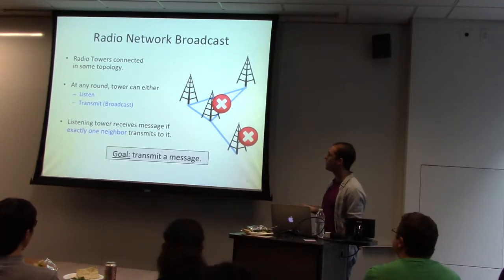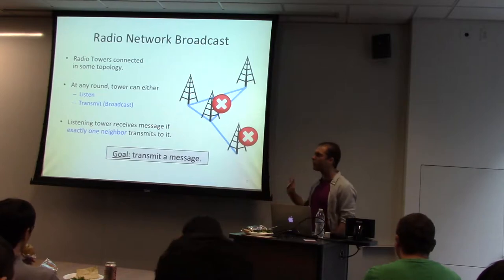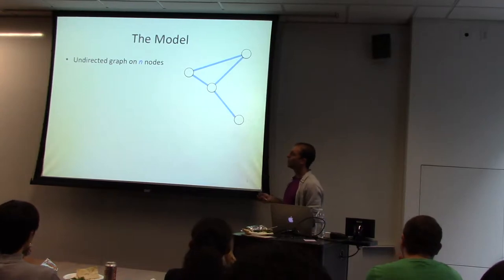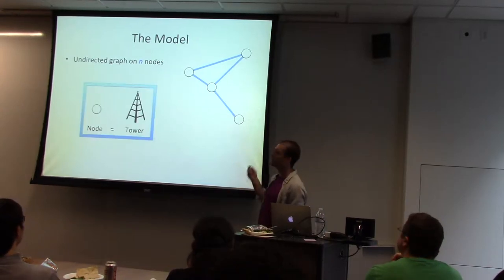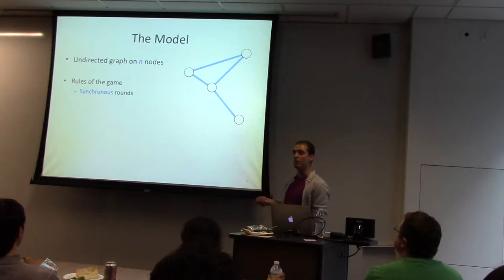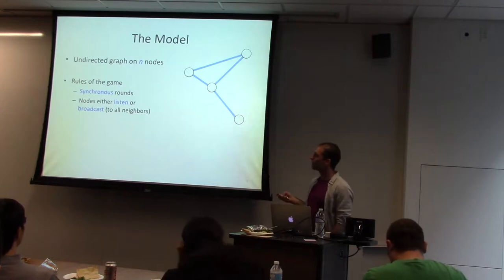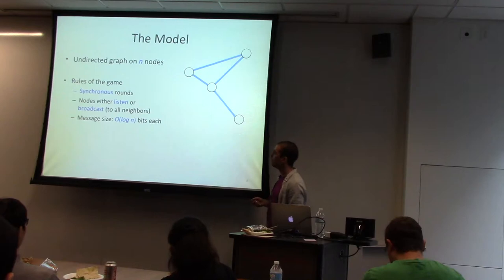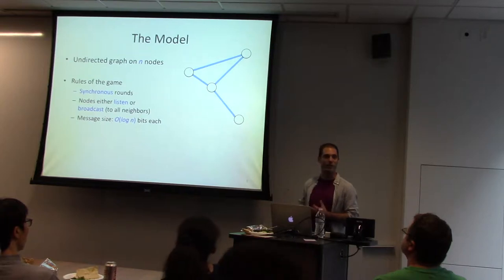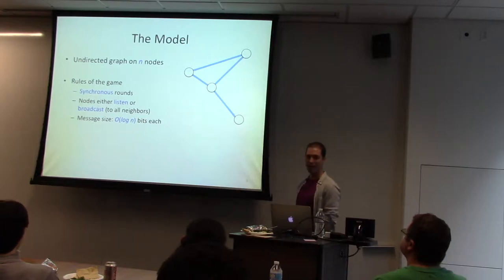Our general goal will be to transmit the message through this network. More precisely, we have an undirected graph on n nodes where a node corresponds to a tower. The rules of the game are as follows: first, we have synchronous rounds, so at time step one I can decide to listen or transmit. Message sizes are order of log n bits — this ensures we don't transmit way too much information.